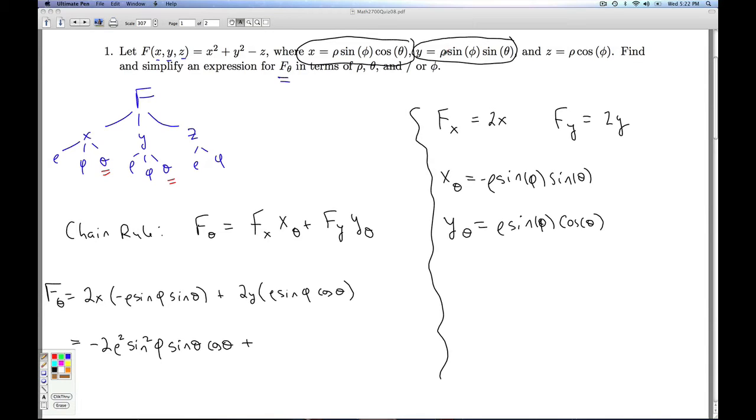When I substitute this in for y, I already have a rho sine phi. So they'll get squared, and I'll have a cosine theta sine theta. So I'm going to get plus 2 rho squared sine squared phi sine theta cosine theta.